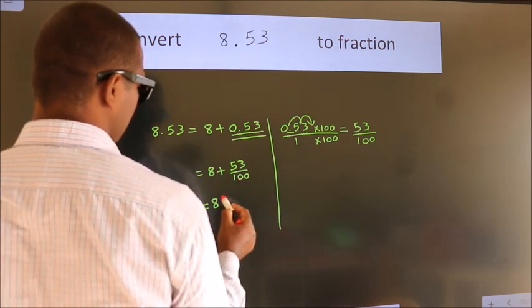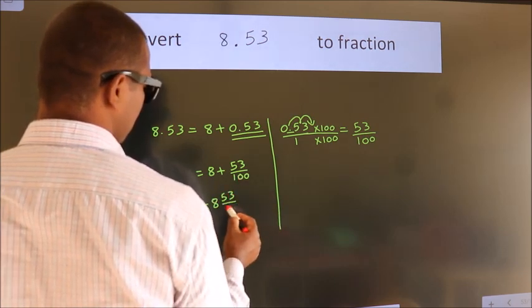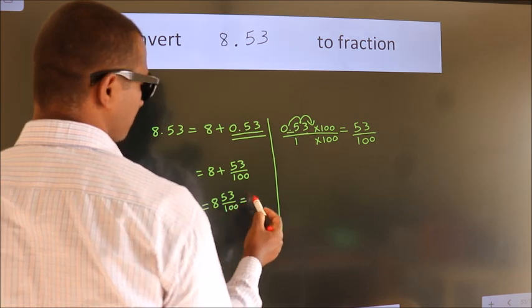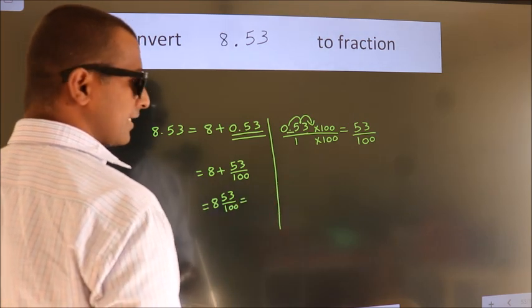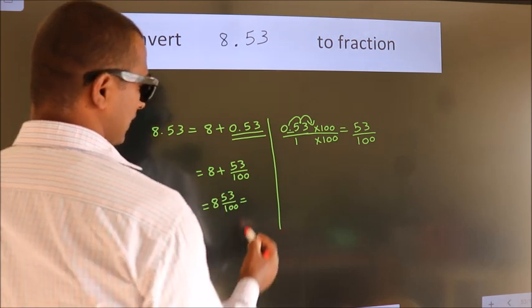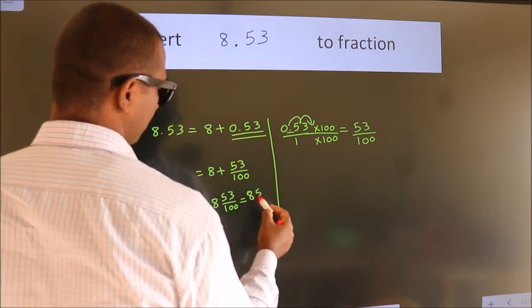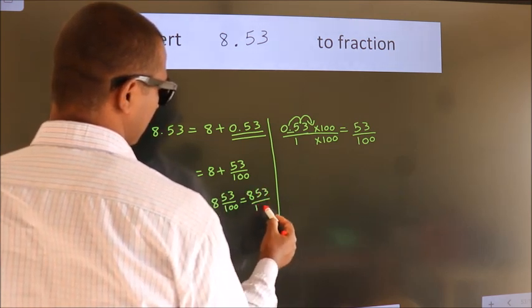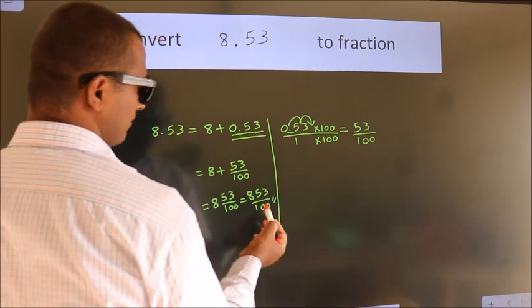In mixed fraction it is 8, 53 over 100. And in improper fraction it is 8 into 100, 800 plus 53, 853 by 100 is our fraction.